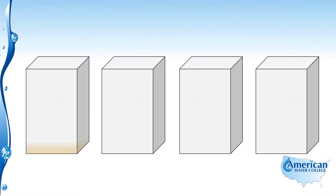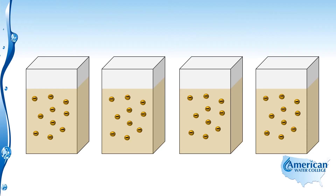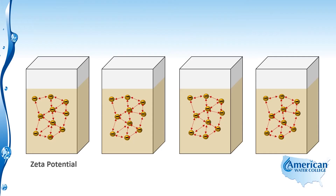Here I want to talk more about the coagulation process. For illustration purposes I have four jars that have negatively charged colloidal matter in each of them. All of these particles carry the negative charge — they repel one another, and that repulsive force is called zeta potential. The zeta potential can be measured to determine the extent to which the particles are carrying a negative charge within the solution.